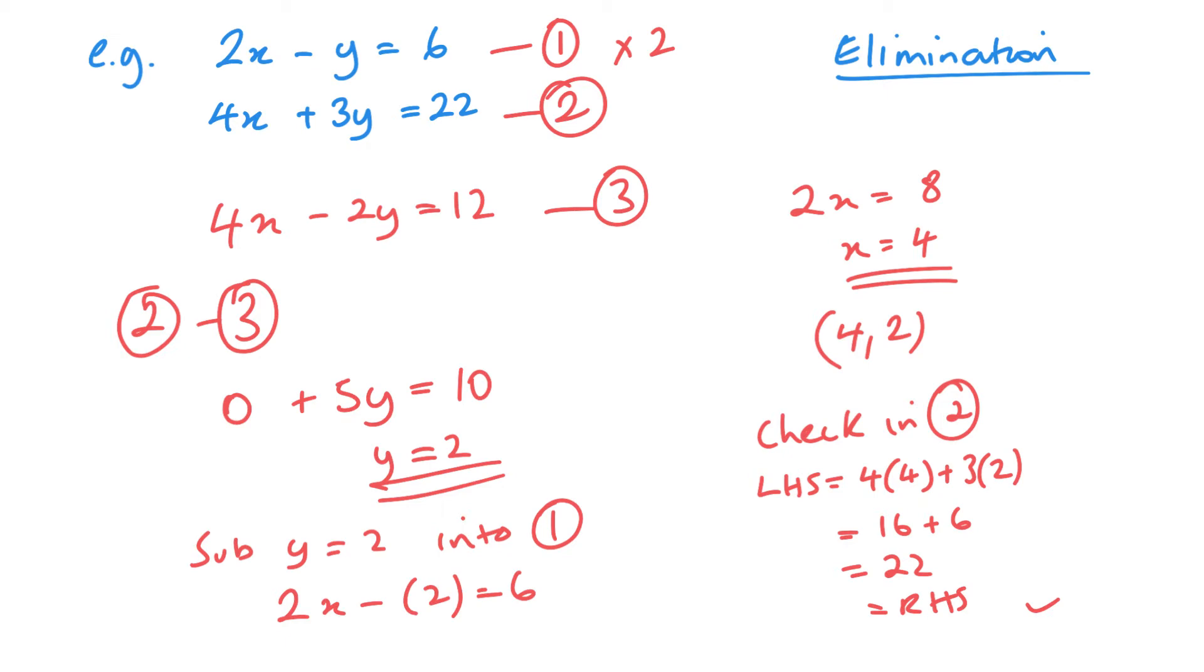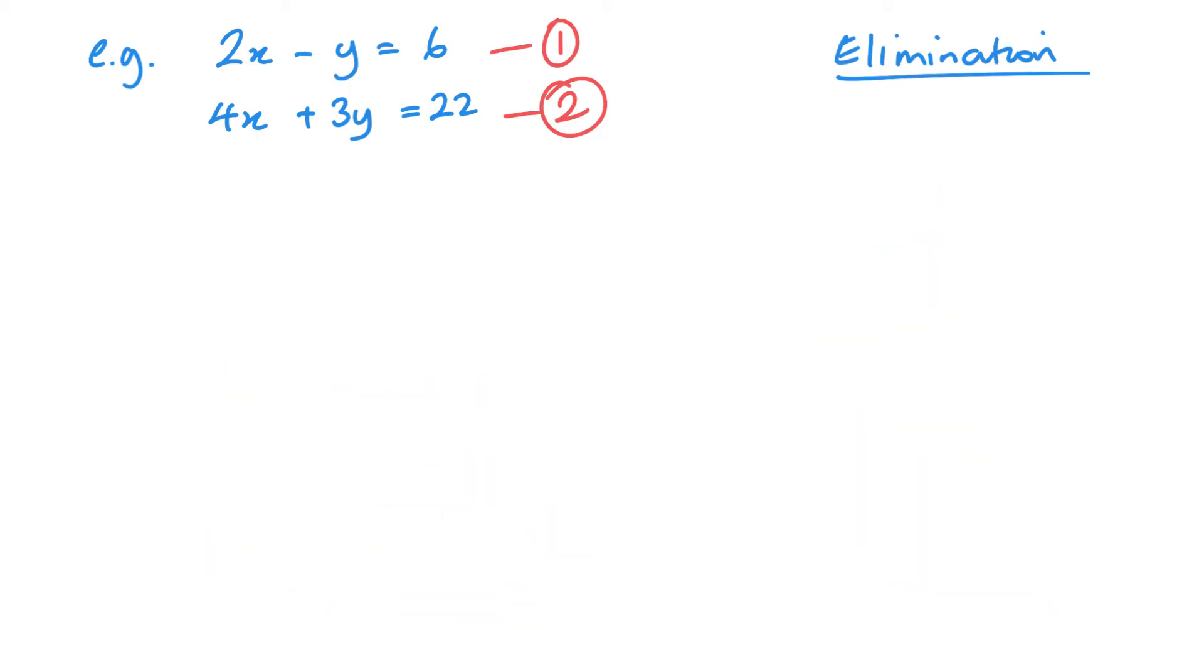Now I'm going to go back and just redo the elimination method in case you made the y's equal in size. So if I multiply this first one by 3, I could have made the y's equal in size. So this gives me a new equation 3. Now when I look at these, the y's are the same size but they have different signs. Different signs means I add. So I'm adding.